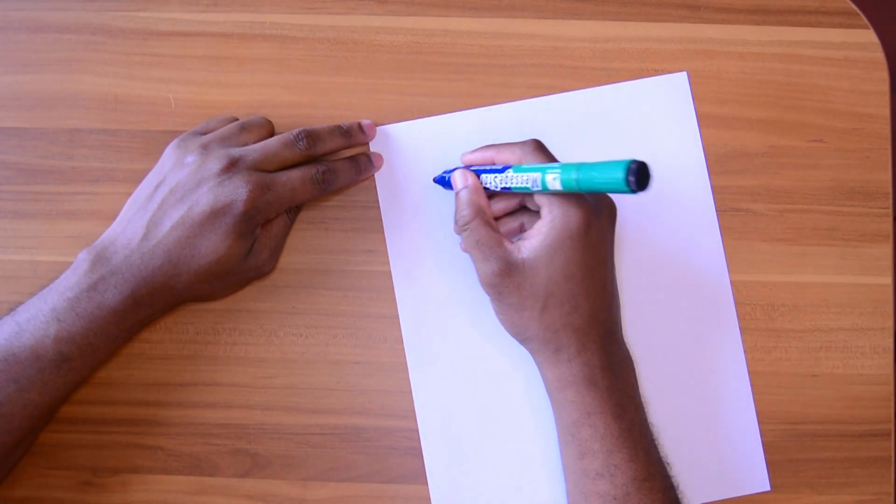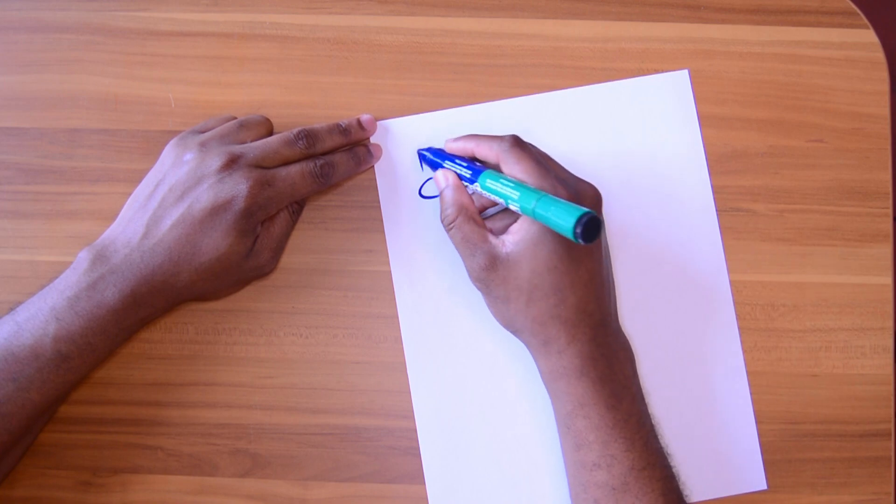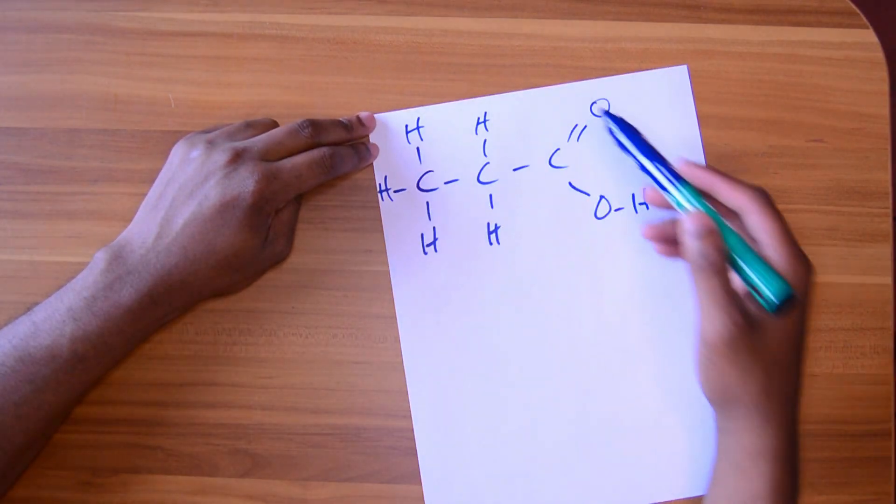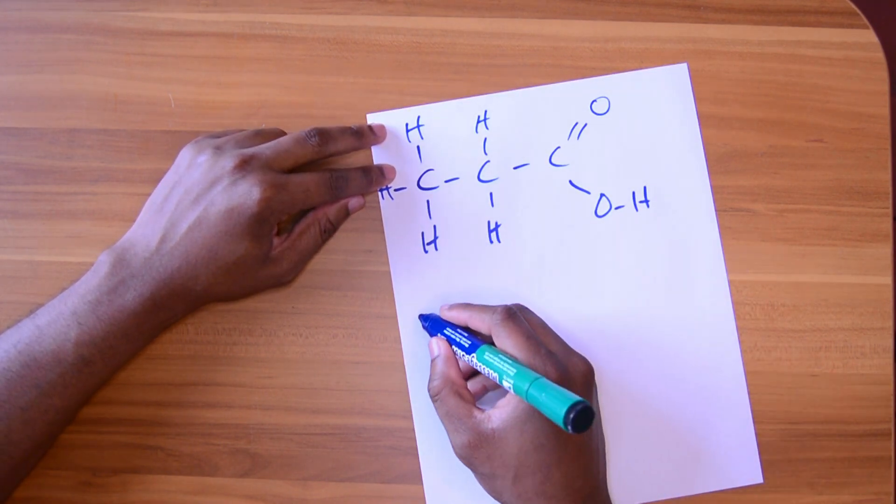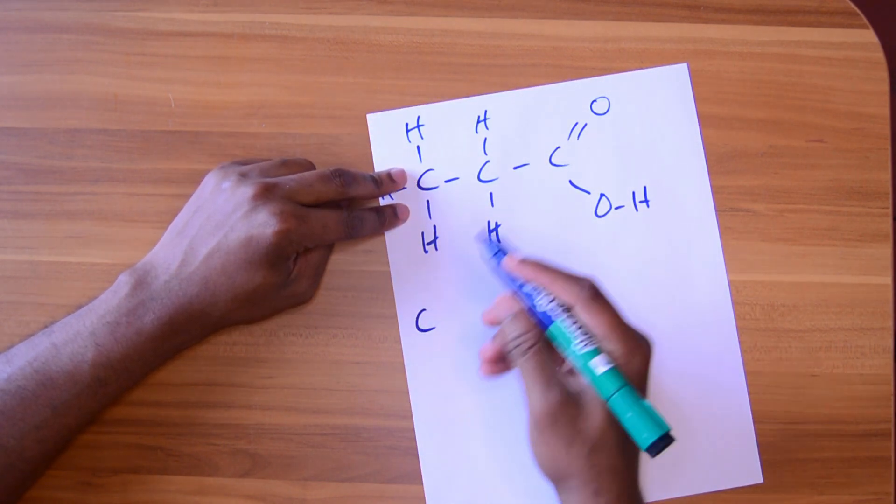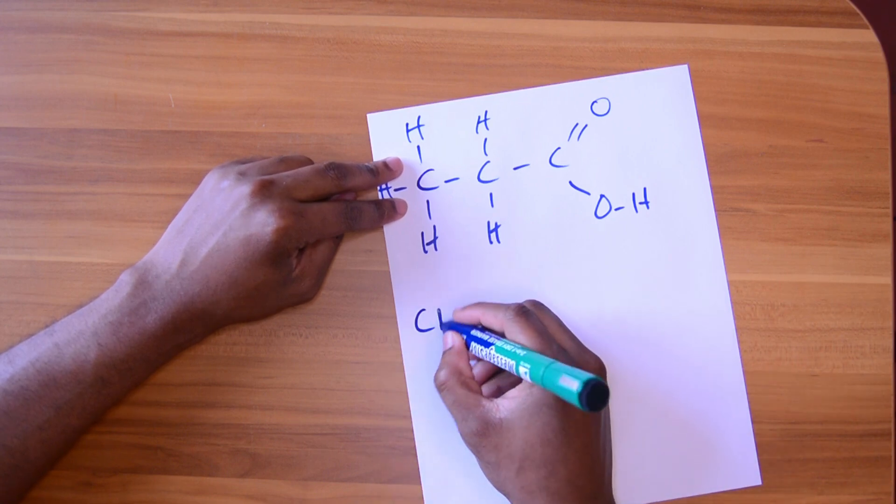Alright, so the structural formula of propanoic acid will look like this. So you will notice how we have lines between every single atom in the molecule, right? We can condense this to the condensed structural formula. This is the fully displayed structural formula. This one we will condense it.